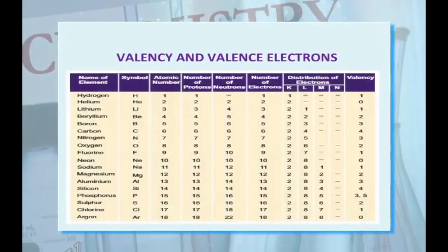These are the representations of different elements, their symbol, their atomic number, their valence electrons and the distribution of electrons in different shells. Dear learners, let us recapitulate what we have learned in this chapter.